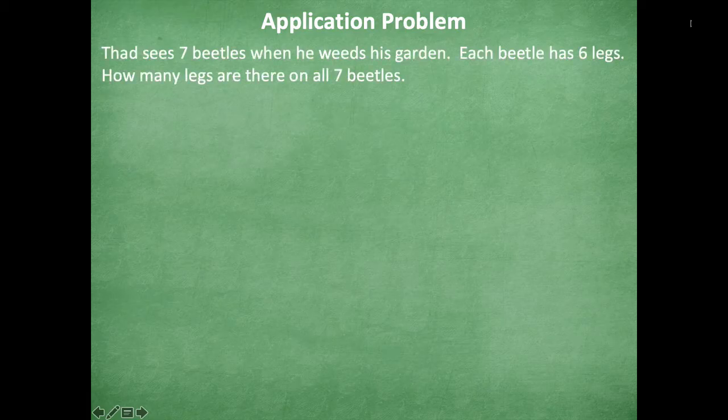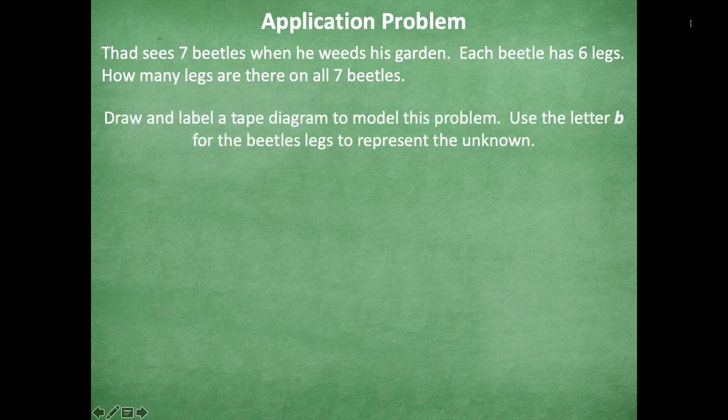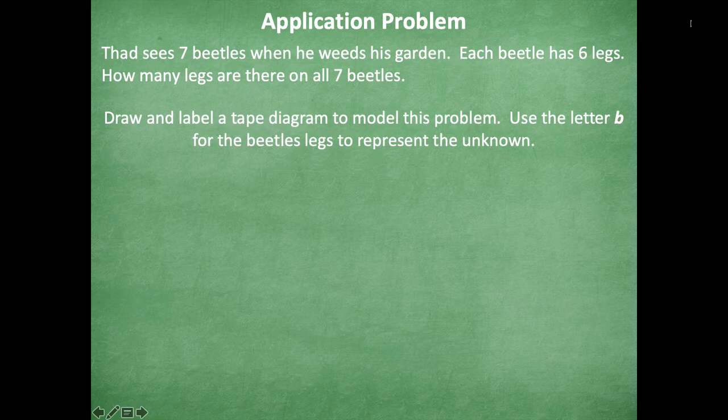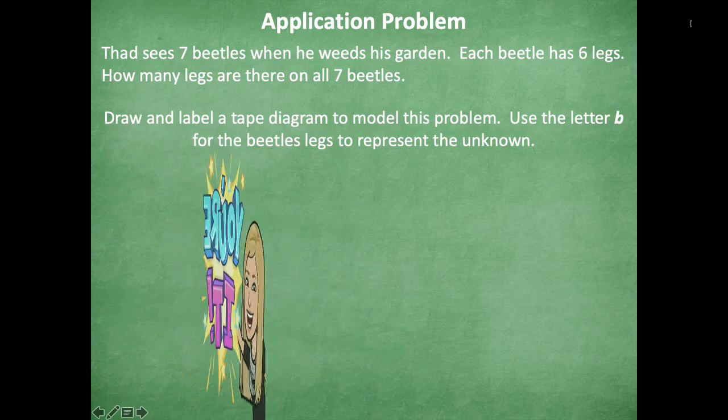Let's get started with our application problem. Our question says: Thad sees seven beetles when he weeds his garden. Each beetle has six legs. How many legs are there on all seven beetles? So you're going to draw and label a tape diagram to model this problem. Use the letter B for the beetles' legs to represent the unknown.